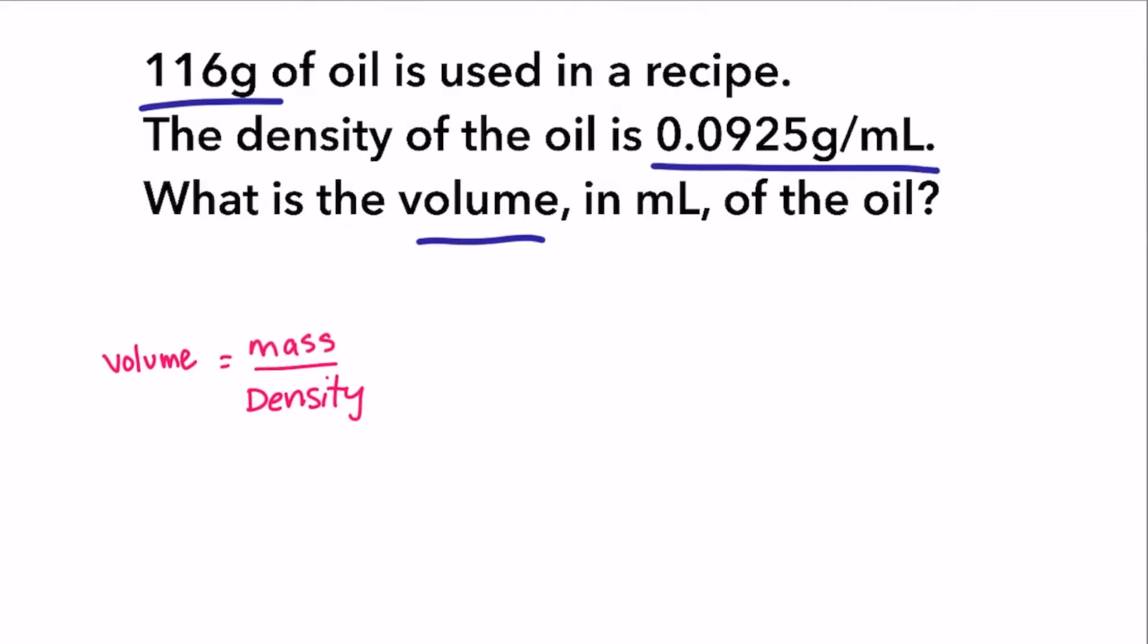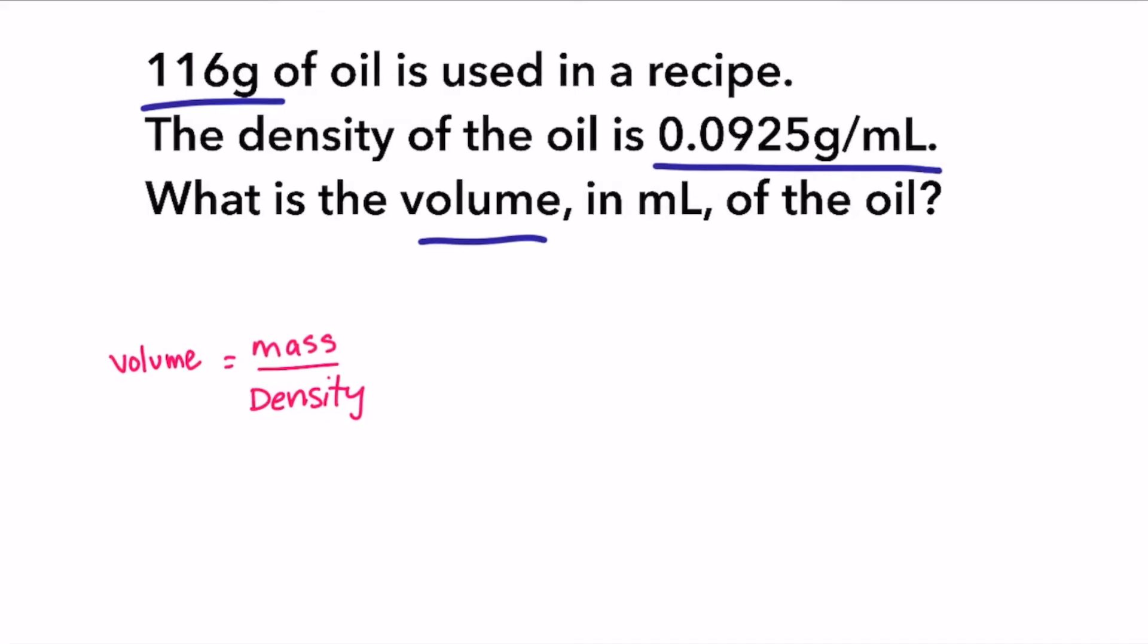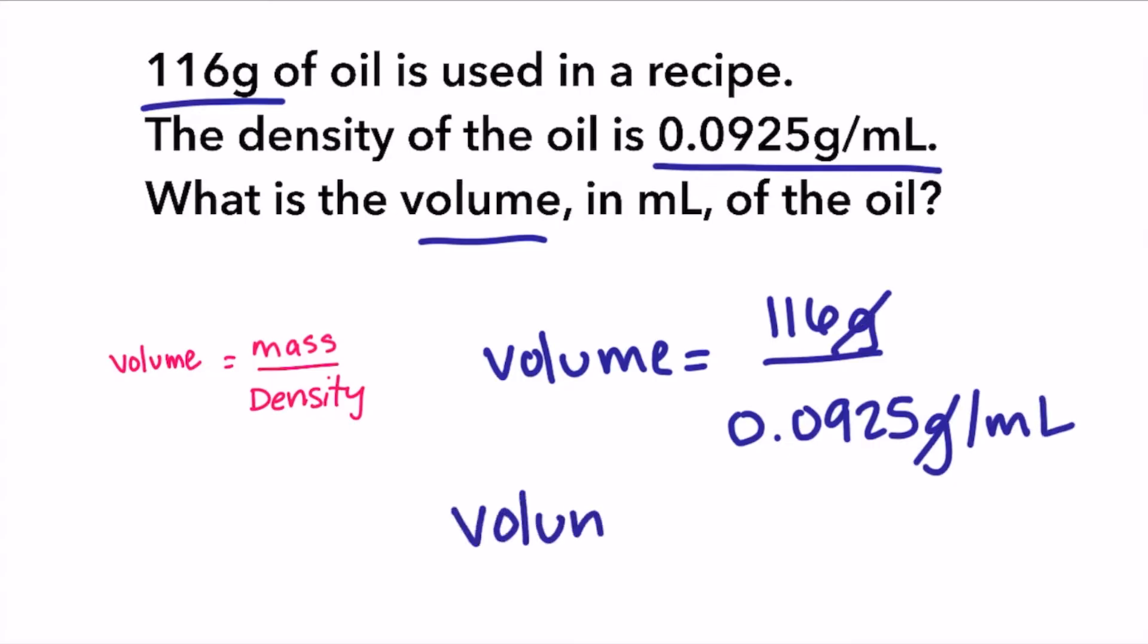Now we can substitute the information into our rearranged formula. Volume equals 116 grams divided by 0.0925 grams per milliliter. The grams cancel out and we're left with 1,254 milliliters. Rounded to three significant figures, we have 1,250 milliliters.